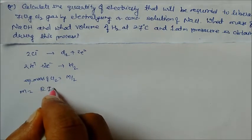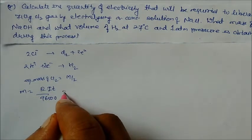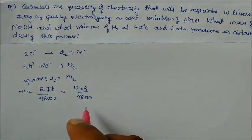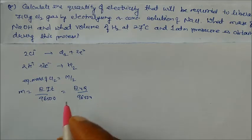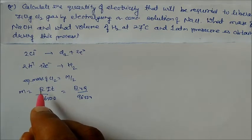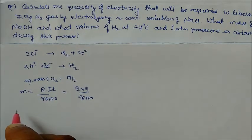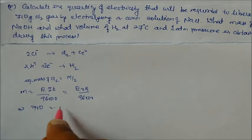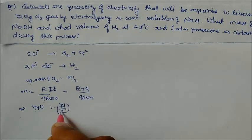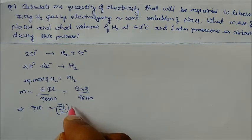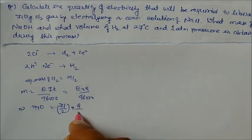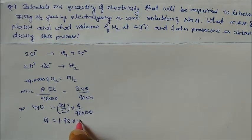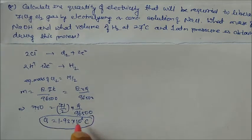Using m / E = q / 96500, we have m = 710 g and E = 71/2. So: 710 / (71/2) = q / 96500. Solving gives q = 1.93 × 10⁶ coulombs. This is the charge required to liberate 710 g of chlorine.